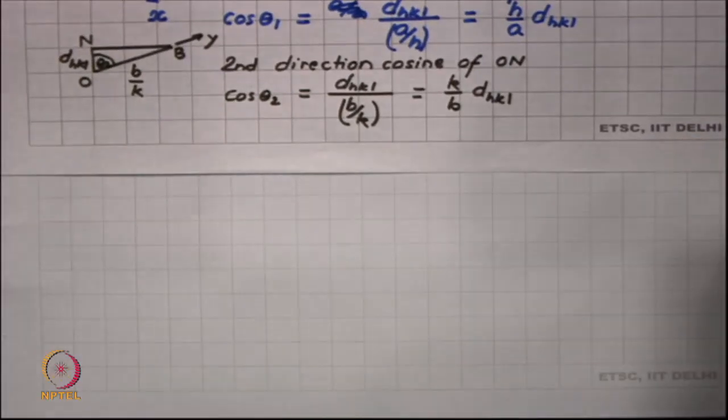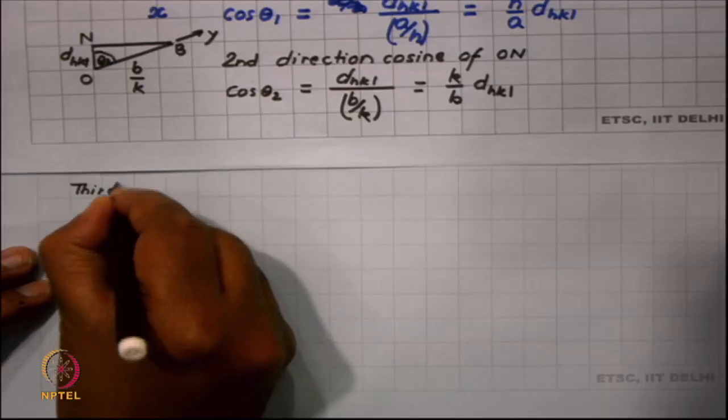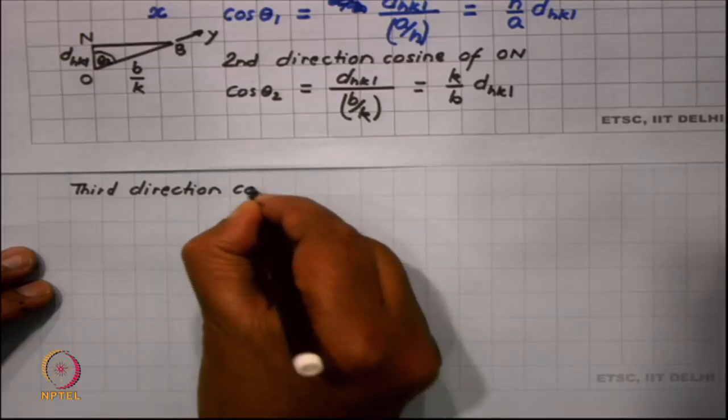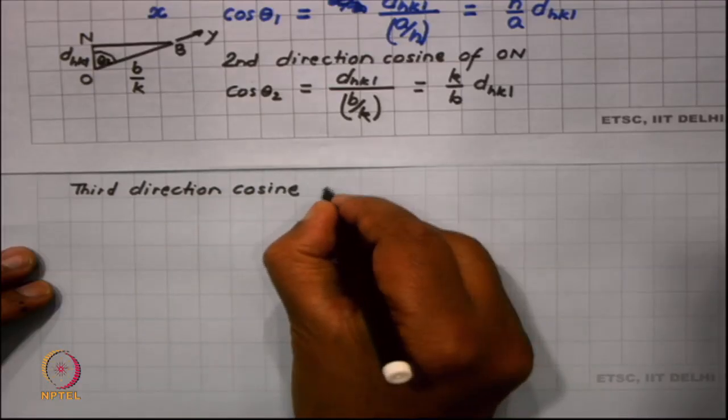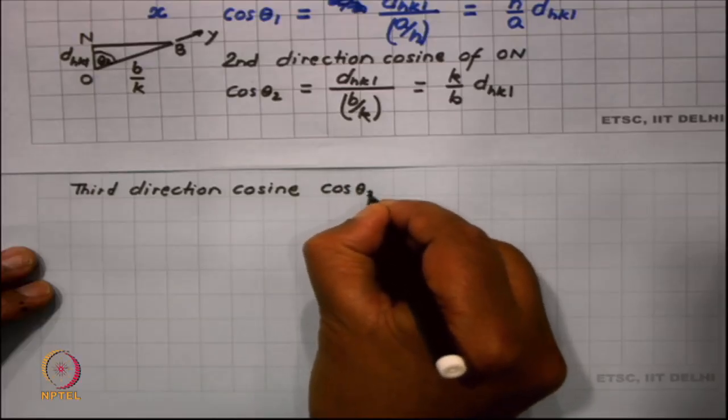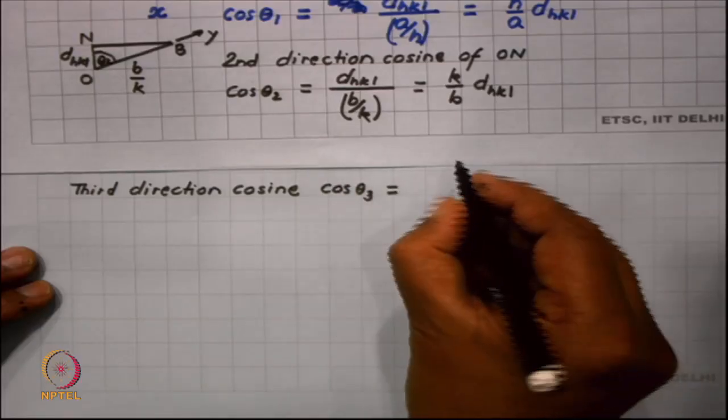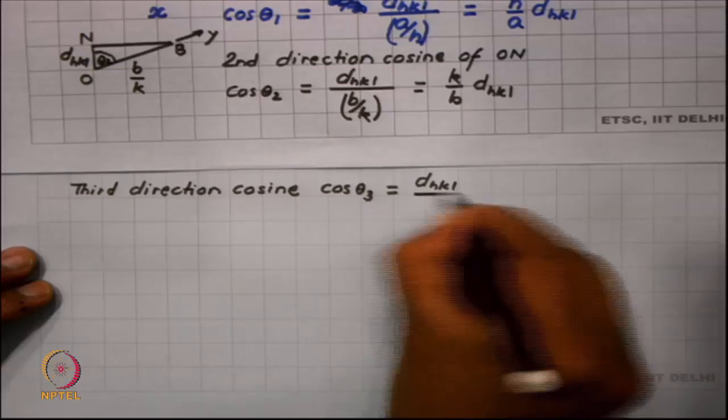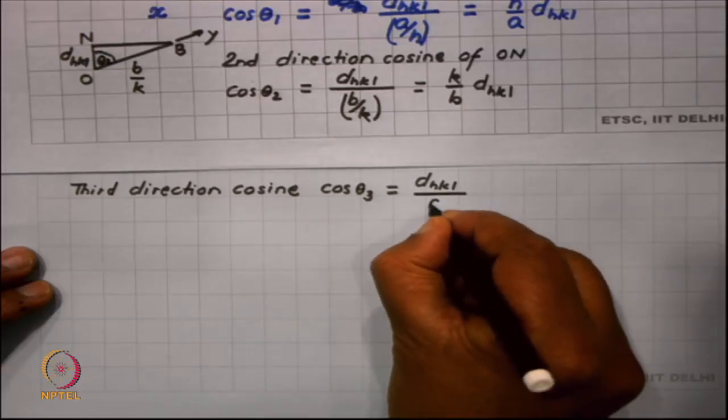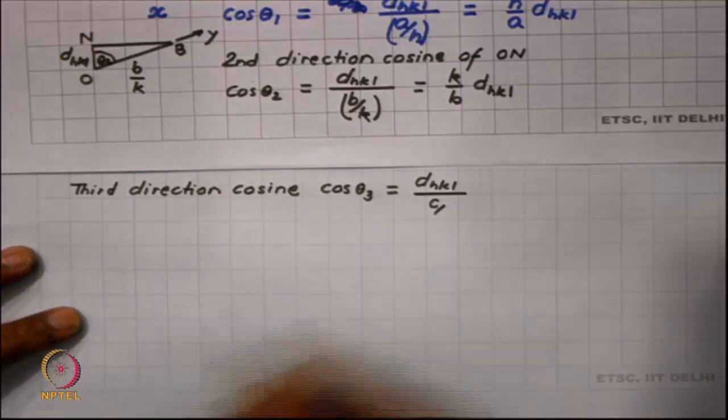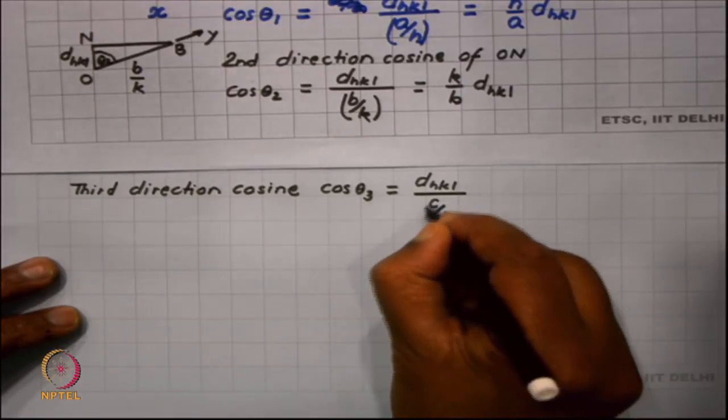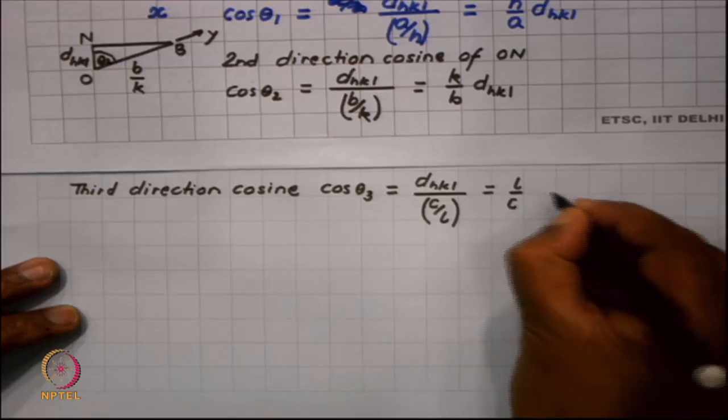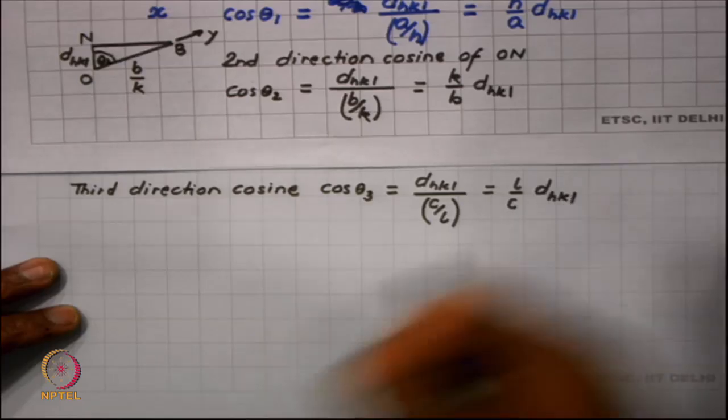I can write the third direction cosine simply by looking at the pattern. Cos theta 3: the corresponding lattice parameter now is c, the miller index is l, so I divide by c by l, and I get l by c times d_hkl.